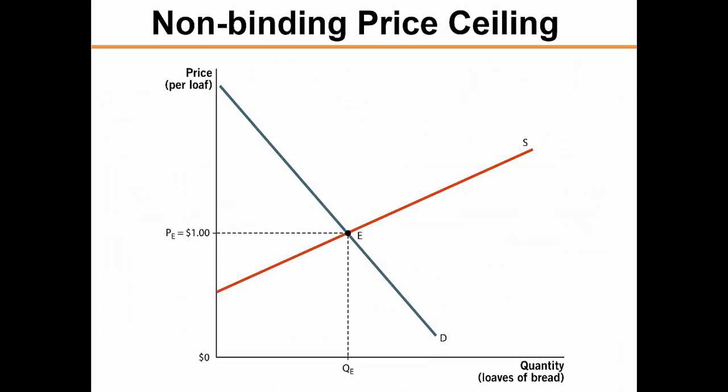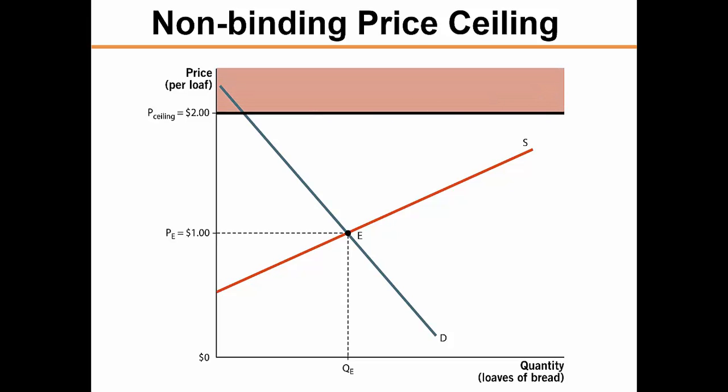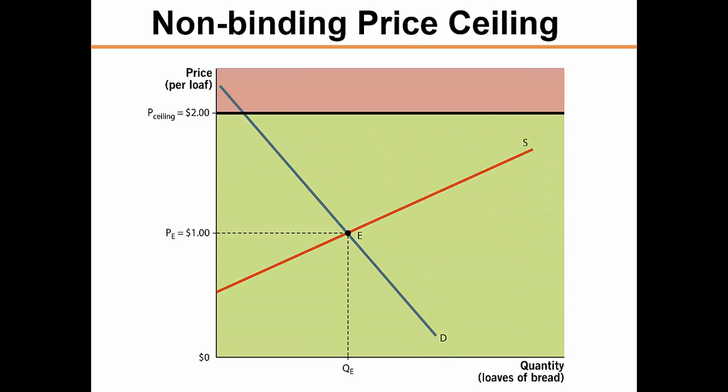Not all price ceilings are effective. When this is the case, the price ceiling is said to be non-binding. This figure shows a price ceiling of $2 for a loaf of bread in the market, and $2 is above the equilibrium price. All prices at or below $2 are legal. Prices above the price ceiling — the red shaded area — are illegal. But since this market is in equilibrium at point E, which occurs in the green legal region, the price ceiling does not affect the functioning of the market and is therefore non-binding. Price is regulated by supply and demand, and as long as equilibrium remains below the price ceiling, we are fine.